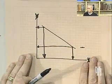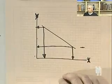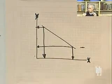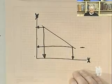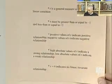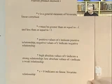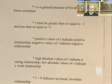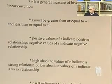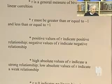The last attribute of Pearson Product Moment R is that high absolute values of R indicate a strong relationship, and low absolute values of R indicate a weak relationship. High absolute values indicate a strong relationship; low absolute values indicate a weak relationship between the two variables.